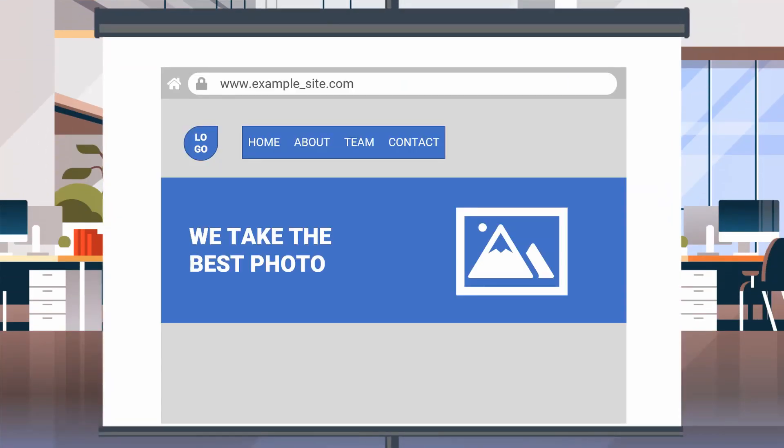So the first one is navigation. Rule number one for navigation is make it simple and keep it that way. Don't be too experimental with this. Normally it's positioned on top, either left or right, or in the header's middle. Occasionally it's positioned at the side.